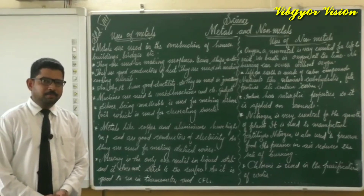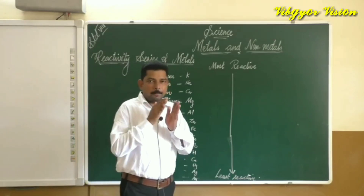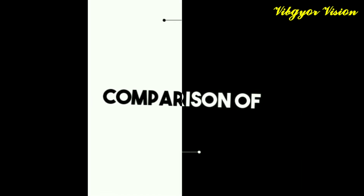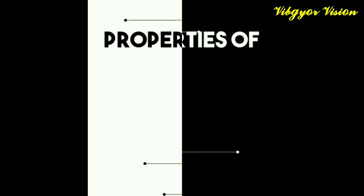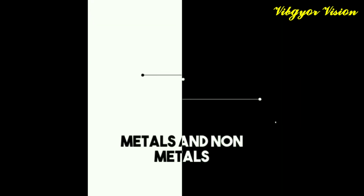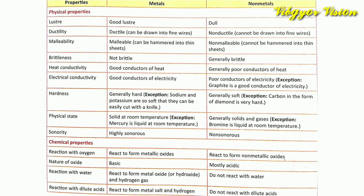Hello students, welcome to the world of knowledge. Now we are going to compare properties of metals and non-metals. Let's discuss the first property, that is luster. Metals have luster, but non-metals are dull.